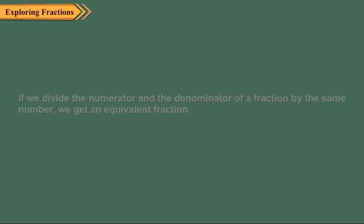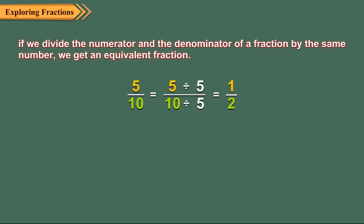In the same way, if we divide the numerator and denominator of a fraction by the same number, we get an equivalent fraction. For example, if we divide the numerator and denominator of five upon ten by five, we get one upon two. So, five upon ten and one upon two are equivalent. Thus, when the numerator and denominator of a fraction are either multiplied or divided by the same number, we get an equivalent fraction.